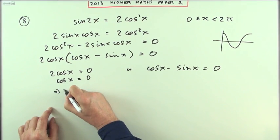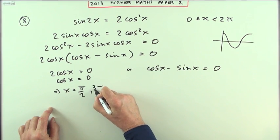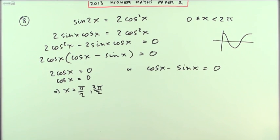So the solution for this part is x equals pi upon 2 and x equals 3 pi upon 2. So that wasn't too bad.